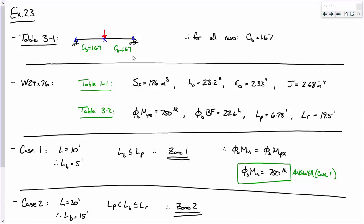I've got the radius of gyration for LTB, that's that RTS value. I've got your pure torsion constant, your warping constant, that's J. So, you can see those values listed there. I've got 176 inches cubed, 23.2 inches, 2.33 inches, and 2.68 inches to the fourth, respectively, for those values.